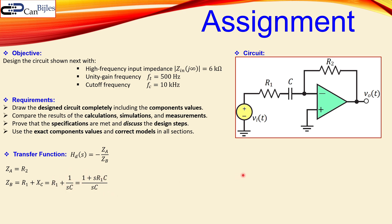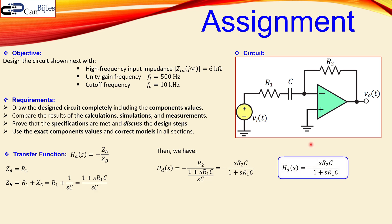Substituting ZA and ZB into the transfer function, we can simplify by multiplying numerator and denominator by sC. This yields the standard high-pass filter transfer function form, confirming the circuit is a high-pass filter.